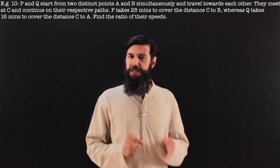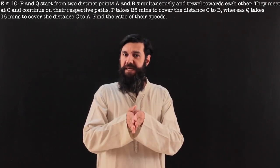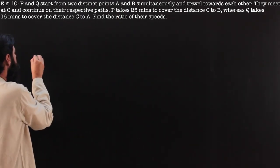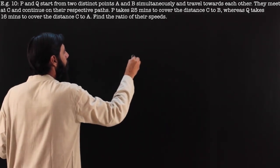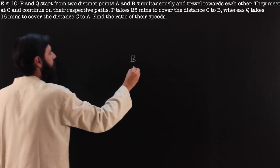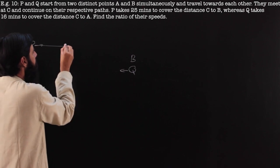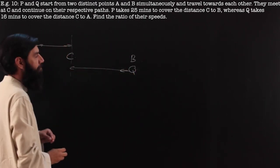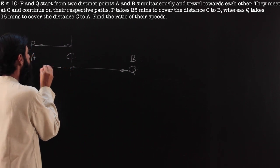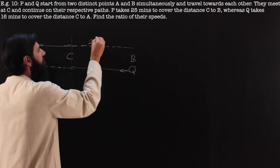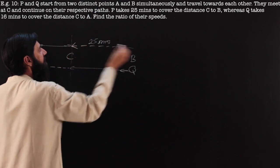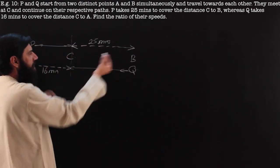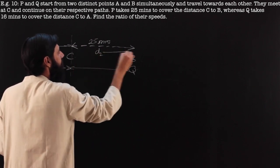We are doing this average difficulty level question only to re-emphasize the point that if people start together and they meet, then the time for which they have been travelling so far is a constant. There are two points A and B: P starts from A, Q starts from B, and they move towards each other. They meet at point C. This is their meeting point. They continue on their path further. P takes 25 minutes for distance C to B, and Q takes 16 minutes for distance C to A.